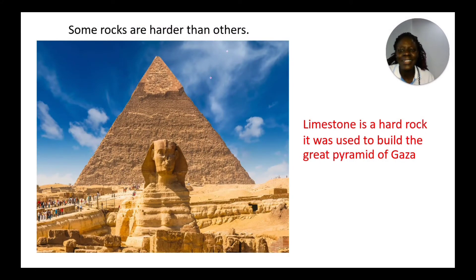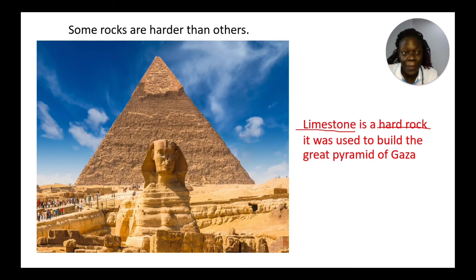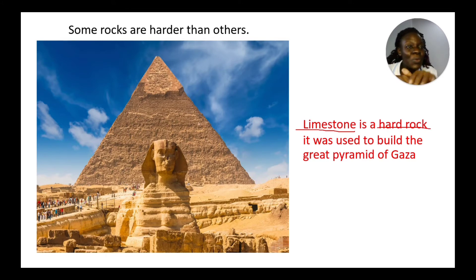Some rocks are harder than others. This is a pyramid — limestone is a hard rock, and it was used to build the Great Pyramid of Giza. So rocks have different sizes, shapes, colors, textures — smooth or rough — and also different hardness.